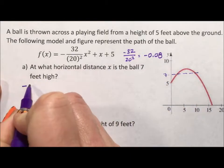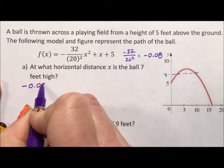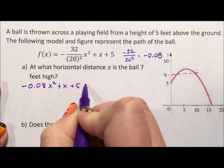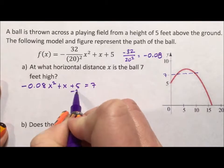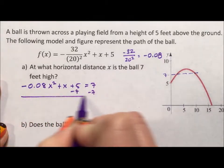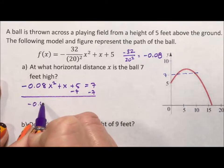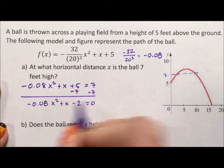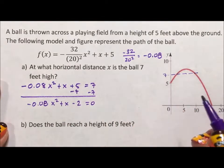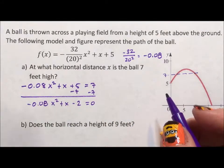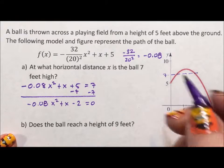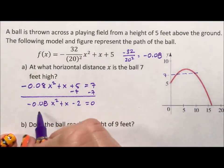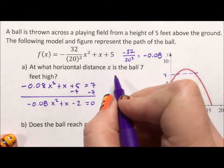So I want to know when is negative 0.08 x squared plus x plus 5 equal to 7. Move this 7 over. Negative 0.08 x squared plus x minus 2 equal to 0. I could solve that by factoring. I know this because I've solved it and I found a nice answer. But with a number like 0.08, I don't usually think of factoring right away. I think of the quadratic formula.